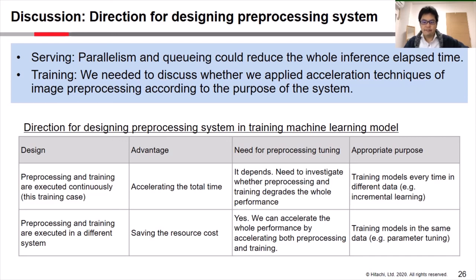The appropriate purpose of this design is training models every time on different data, such as incremental learning. The other design is that preprocessing and training are executed in different systems. In this case, the advantage is that we can save resource costs, and we should tune preprocessing performance since we can accelerate overall performance by optimizing both. The appropriate purpose is training models on the same data, such as parameter tuning.